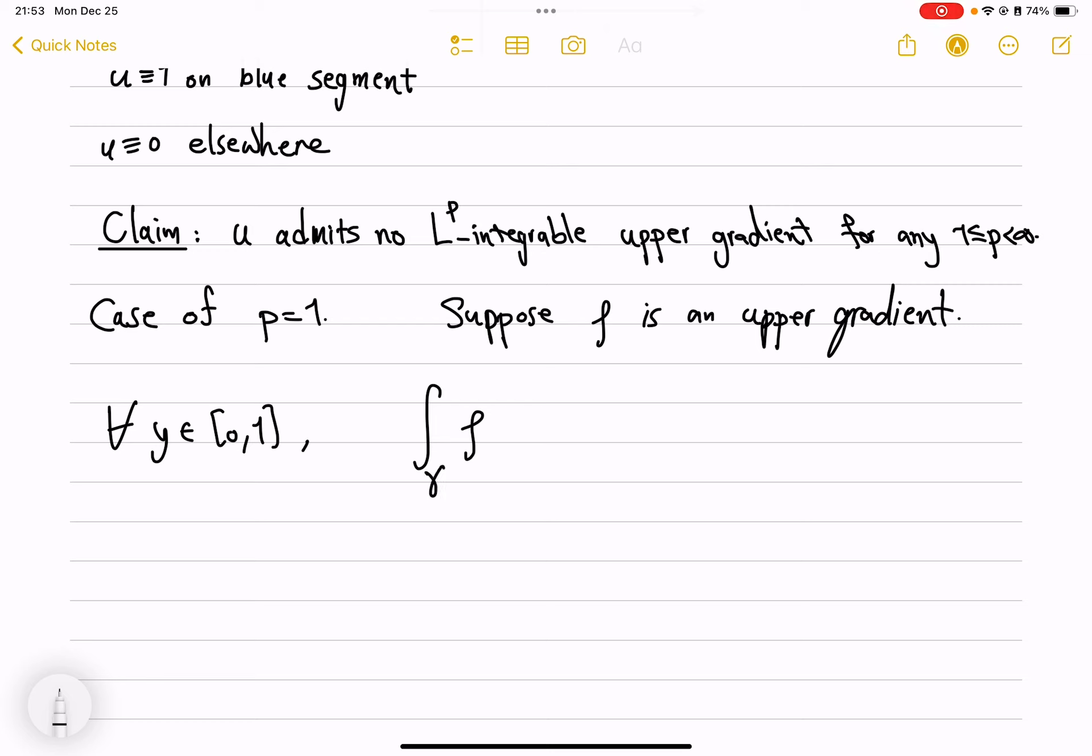So we integrate rho over gamma y, and this is none other than integrating against the Lebesgue 1 measure. This must be bigger than the difference of u values at the two ends.